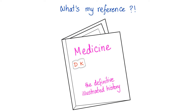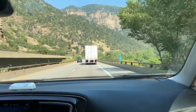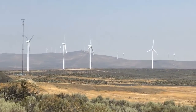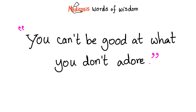I'm not a historian, so what's my reference? My reference is a book called Medicine: That Definitive Illustrated History. Many people graduate medical school every year knowing nothing about the history of medicine. It's important to know whence we came, so that we may understand where we're going. You can't be good at what you don't adore. We're getting ready to talk about platelet disorders and coagulation disorders — first, you have to love the subject. If you love the subject, it'll be a piece of cake, no matter how hard it is.